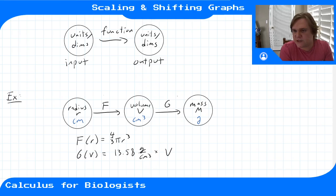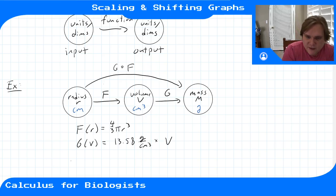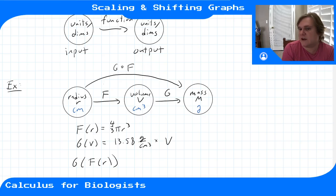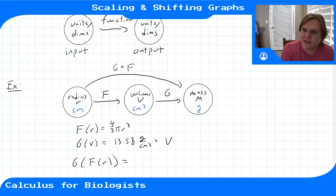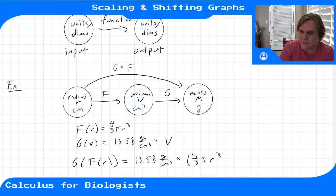When we have two of these functions, we can think about their composition. Here we'd write g of f, because we apply f first and then g. We map straight from the radius to the mass by applying g to f(r). Since g is applied to volumes and f already outputs a volume, we can compose them: 13.58 grams per centimeter cubed times 4/3 π r³, where r is in centimeters, and the units cancel to give grams.